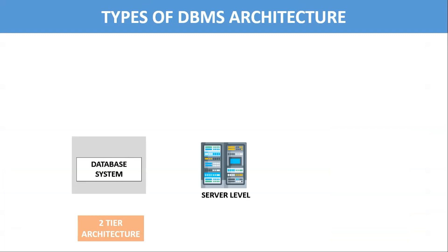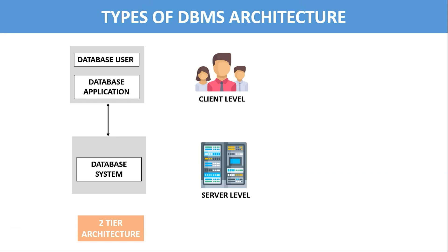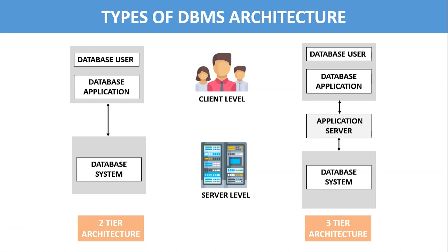In two-tier architecture, the database system is located on the server machine and the DBMS application is present on the client level. These two are linked via a reliable network. The two-tier DBMS architecture is used when we wish to access the DBMS with the help of an application. Three-tier architecture is an extension to two-tier architecture and also the most widely used DBMS architecture. It is similar to two-tier, but there is another separate layer known as the application server between the database server and the client. In this architecture, the client application doesn't communicate directly with the database system; instead, it communicates with the application server, which then internally communicates with the database system.